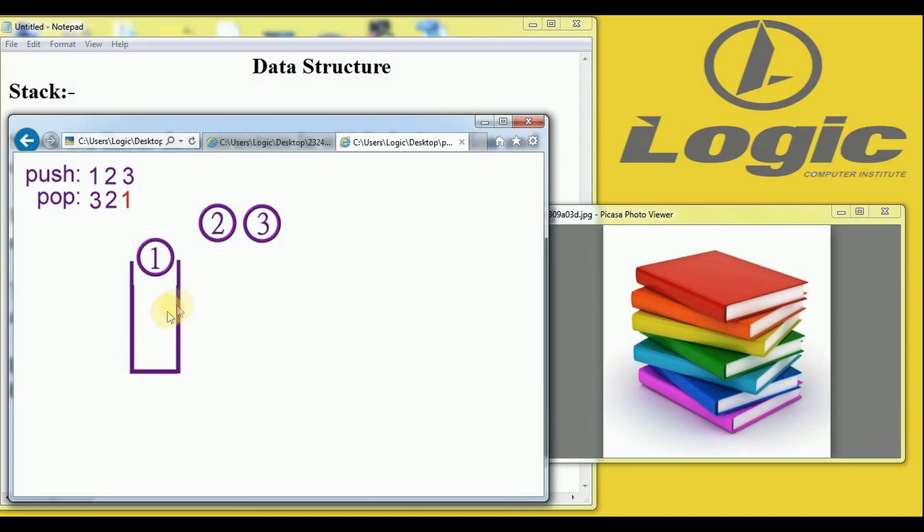The second diagram shows the pop operation. Here, there are already three elements. We remove the third element first, then the second element is popped. And the last one is element one. This is the stack operation.